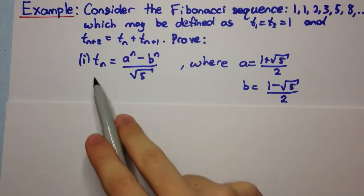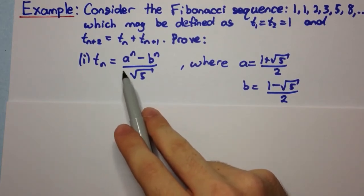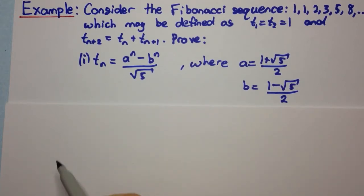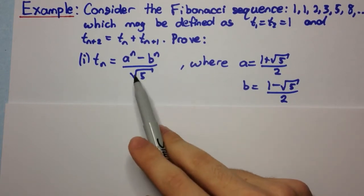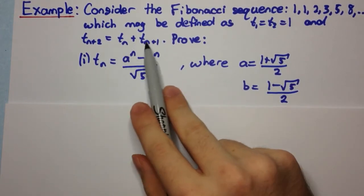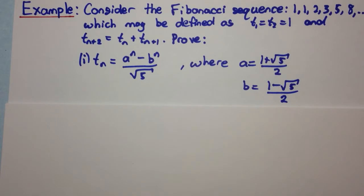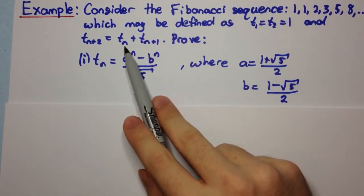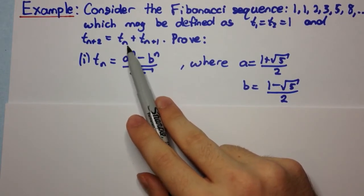Prove that t(n) is equal to (aⁿ minus bⁿ) over root 5, where a and b are the two given numbers. In step 1, usually we would prove for n equals 1, but here, since this is dependent on two different recurrences that differ by 1, we need to prove true for n equals 1 and n equals 2.